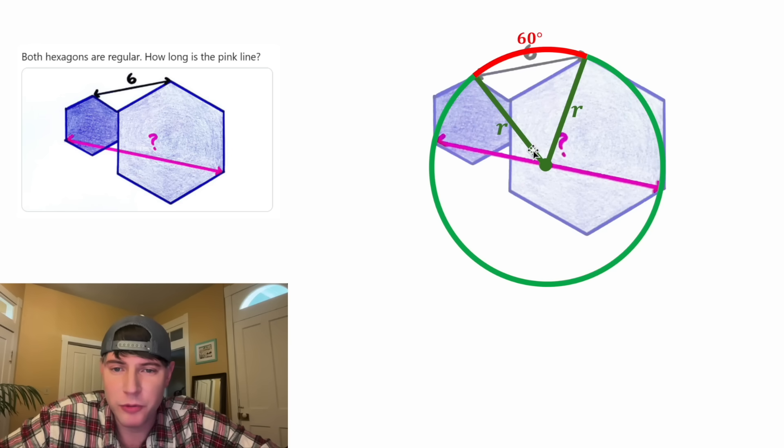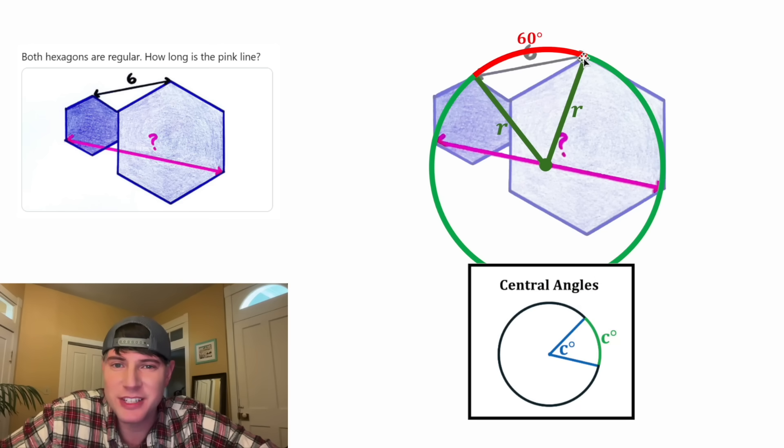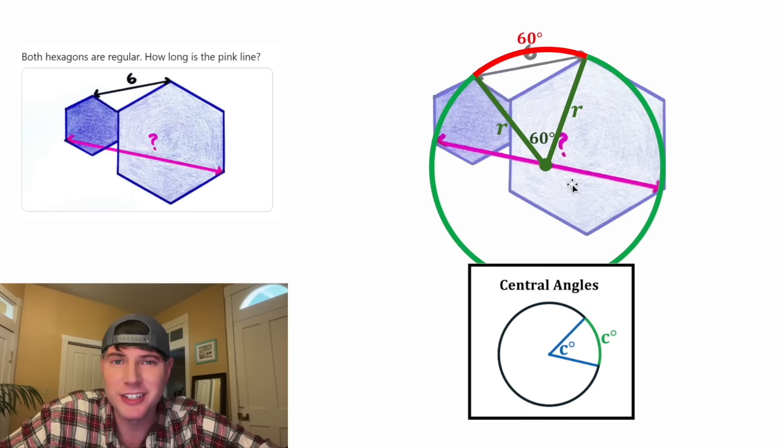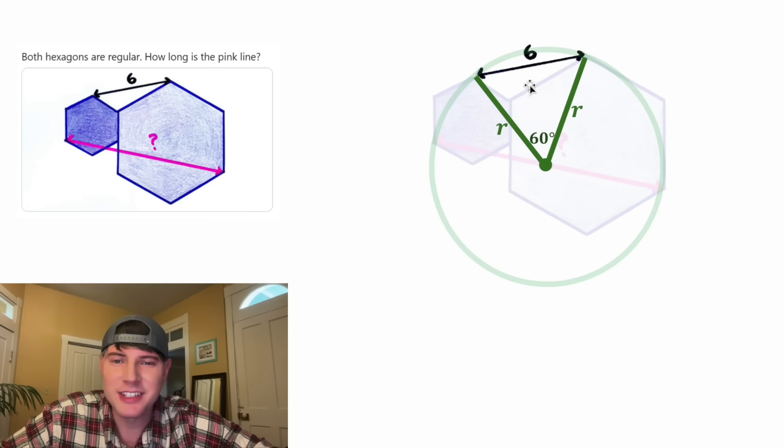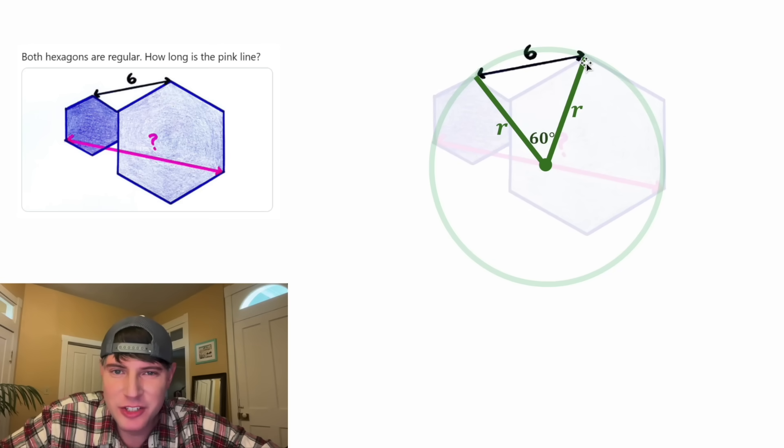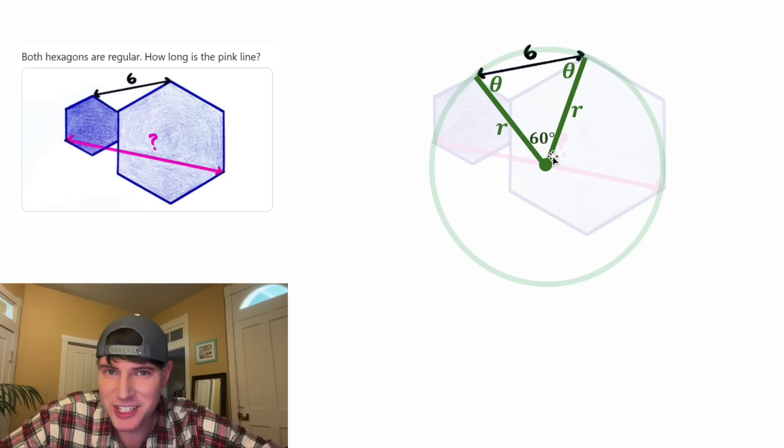Now, these two radii form a central angle that stands on this arc. According to these notes, the measure of a central angle is congruent to the measure of the subtended arc. So this central angle is 60 degrees. And now we have a nice looking triangle with our given line. This is an isosceles triangle with this side equal to R and this side equal to R. That means these two angles opposite the congruent sides will be congruent. Let's call them theta for now. And then since this angle is 60 degrees, these two have to add up to 120 degrees, which means each of them are 60 degrees.